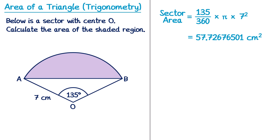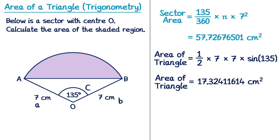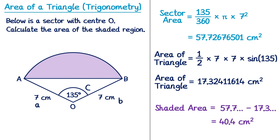To find the shaded region we subtract the area of the white triangle, using the formula half AB sine C. Since this is a sector, both OA and OB are radii, so they're both 7cm. We label both as a and b, and the angle of 135° between them as capital C. The triangle area equals one half multiplied by 7 multiplied by 7 multiplied by sine 135, which gives approximately 17.3cm squared. Subtracting from the sector area of 57.7cm squared gives the shaded region of 40.4cm squared.